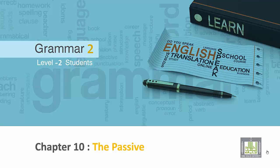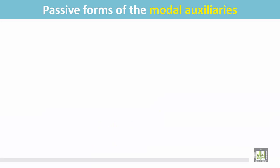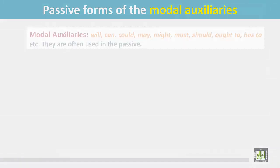Grammar 2 for level 2 students. Chapter 10: The Passive. Passive forms of the modal auxiliaries.